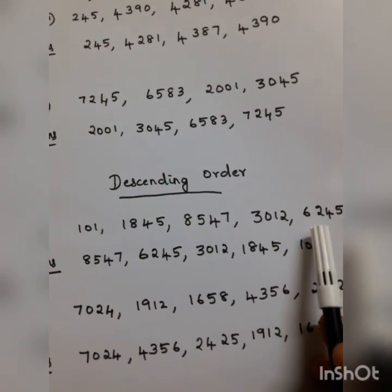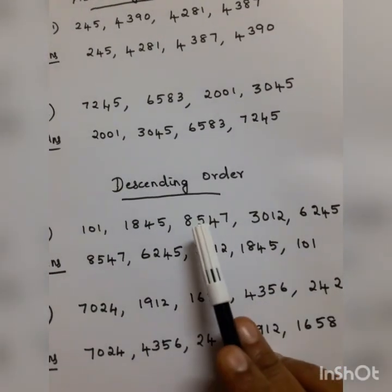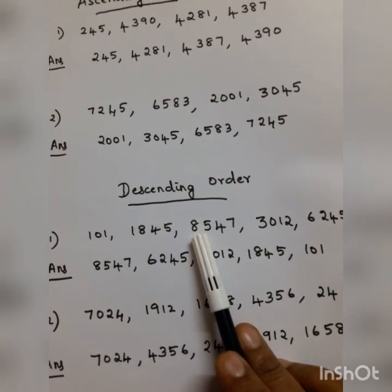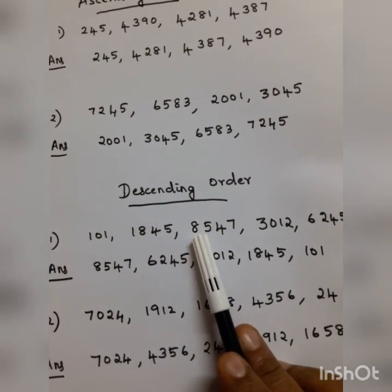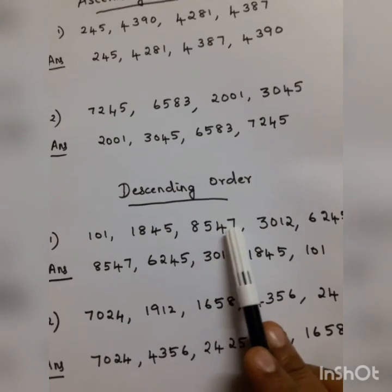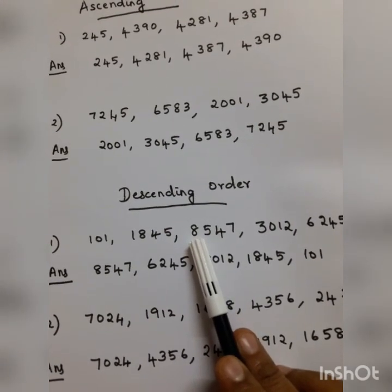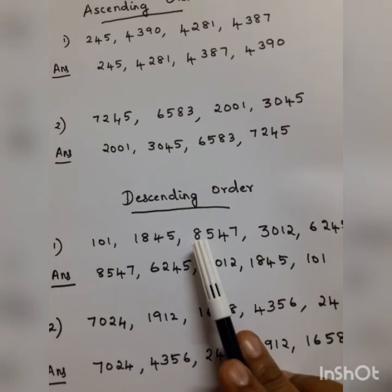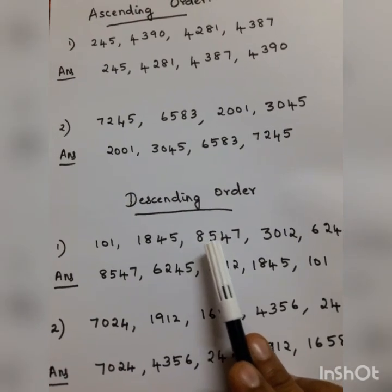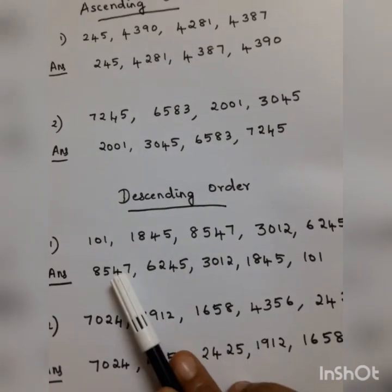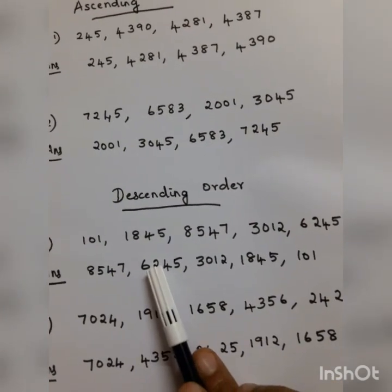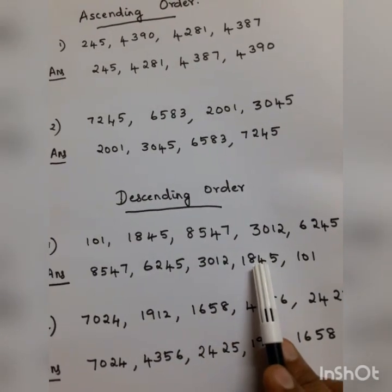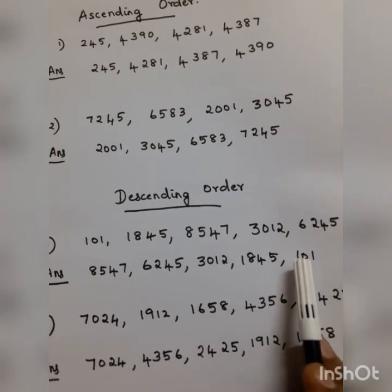The largest first digit here is 8, found in 8,547. Since 8 is the biggest digit, we write 8,547 first. Next comes 6,245, then 3,012, then 1,845, and finally 101.